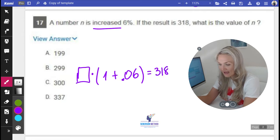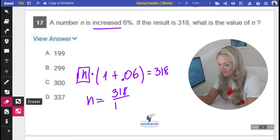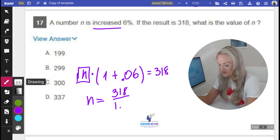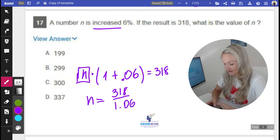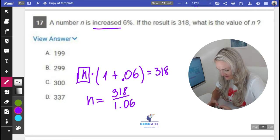How can we find n? How do you isolate n? You divide by 1 plus 0.06 on both sides, which is 318 over 1.06. I'm going to grab my calculator and get 318 divided by 1.06.